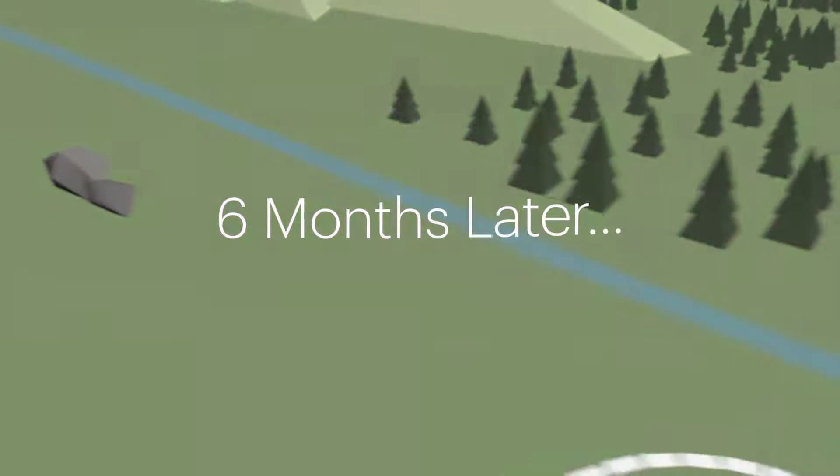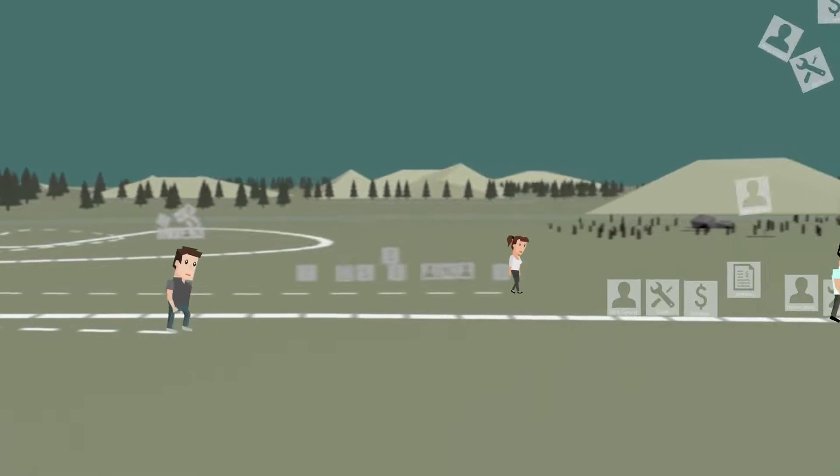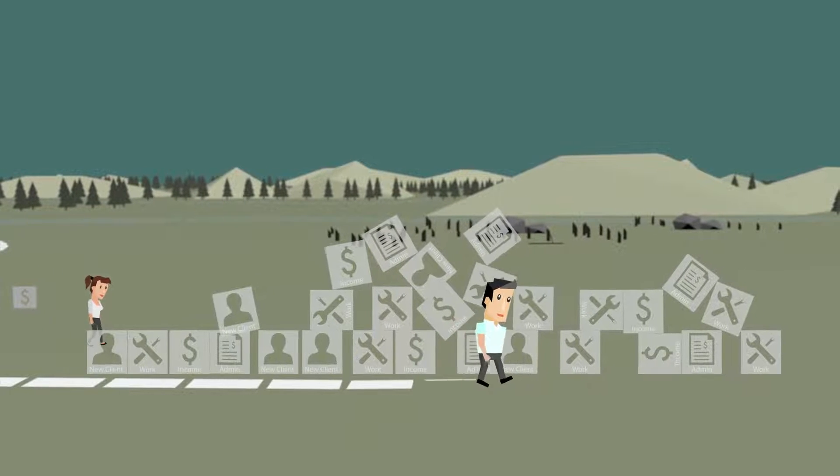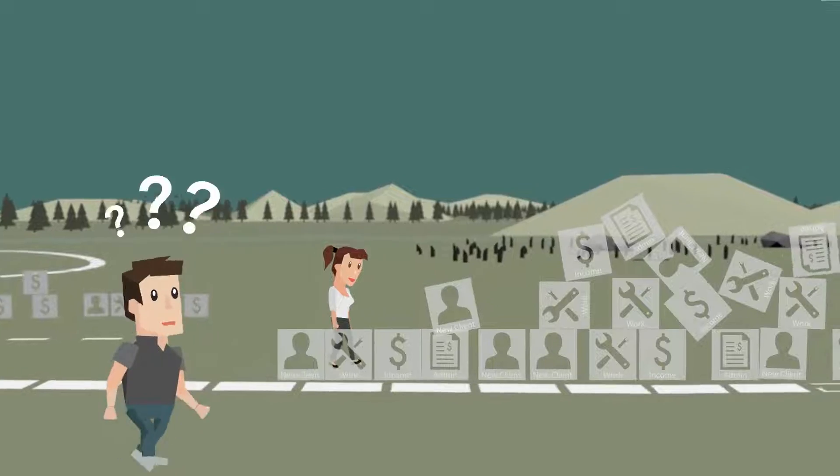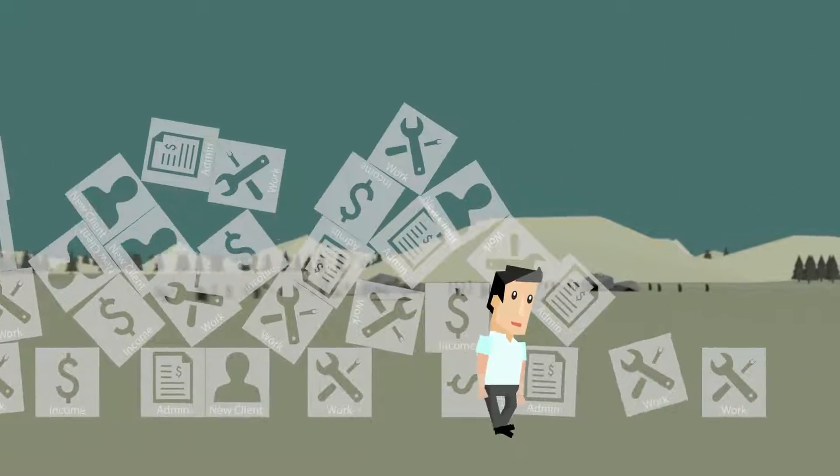But after six months things had begun to change. Bob found himself working longer hours and weekends struggling to keep track of paperwork which led to more than a couple of costly mistakes. He knew he needed to train his team to take over some of his increasing workload but he just never seemed to find the time.